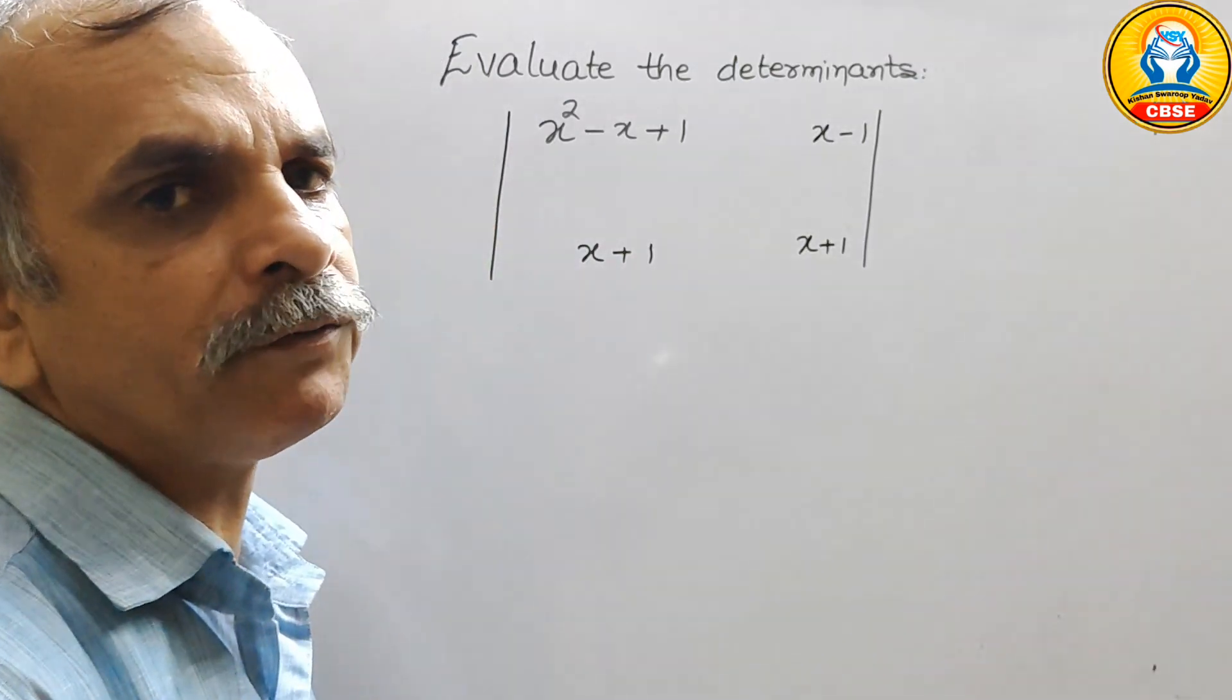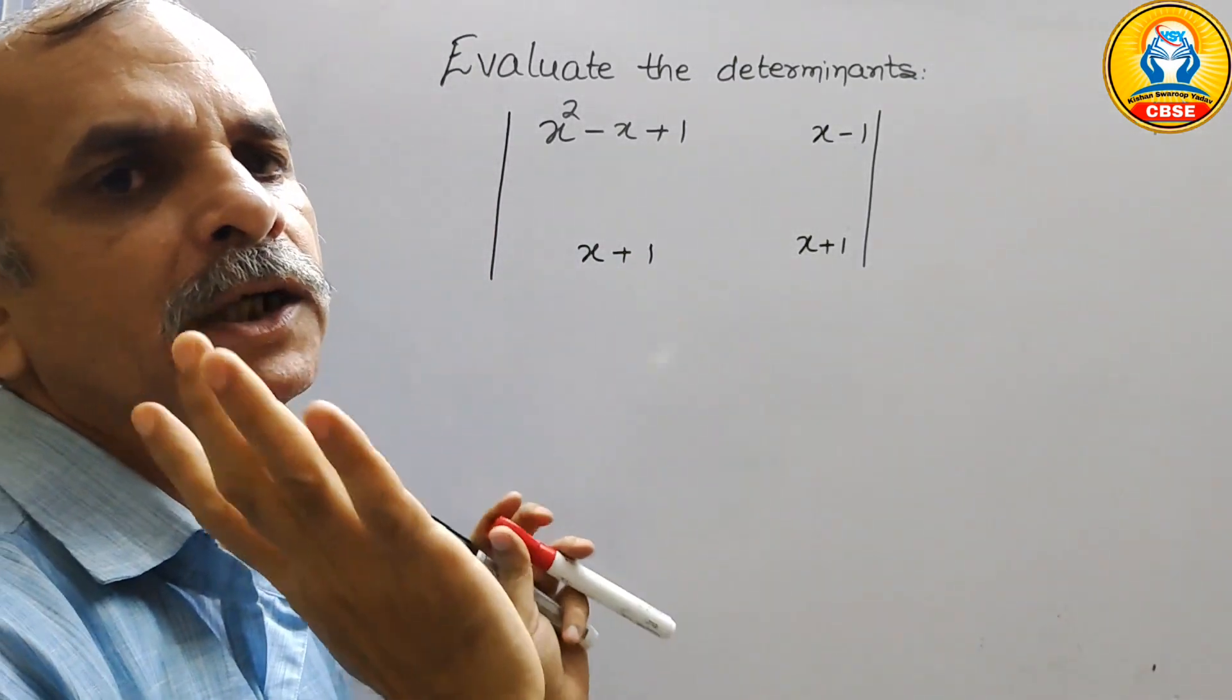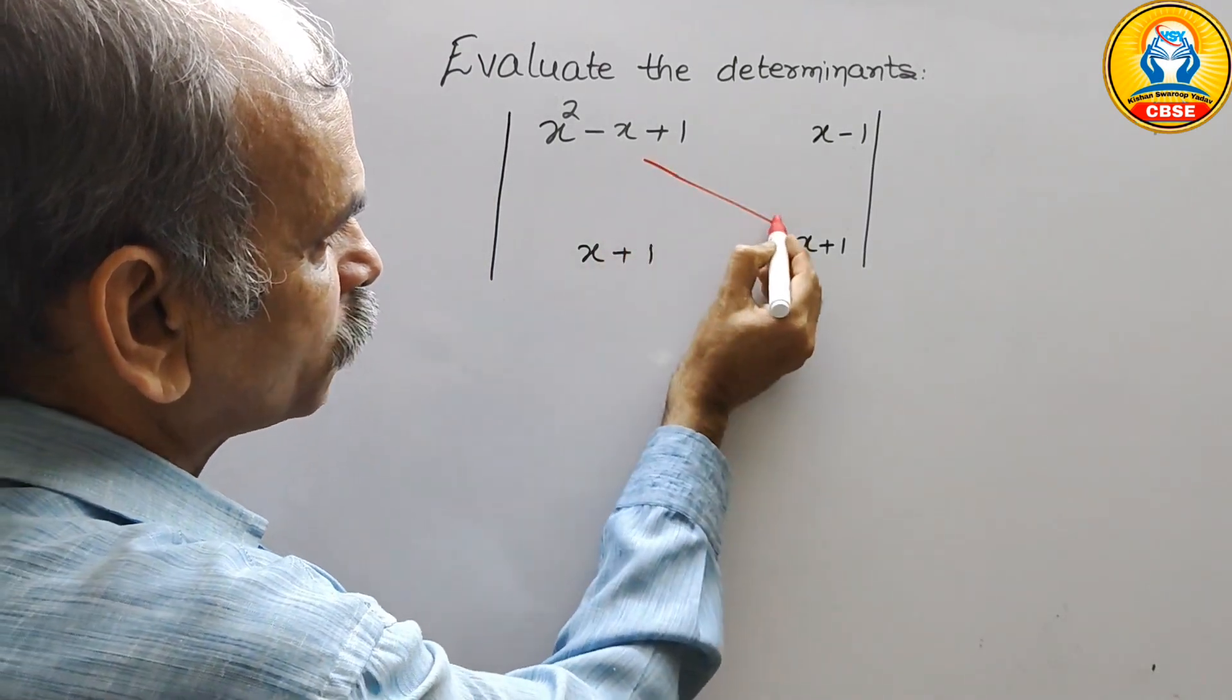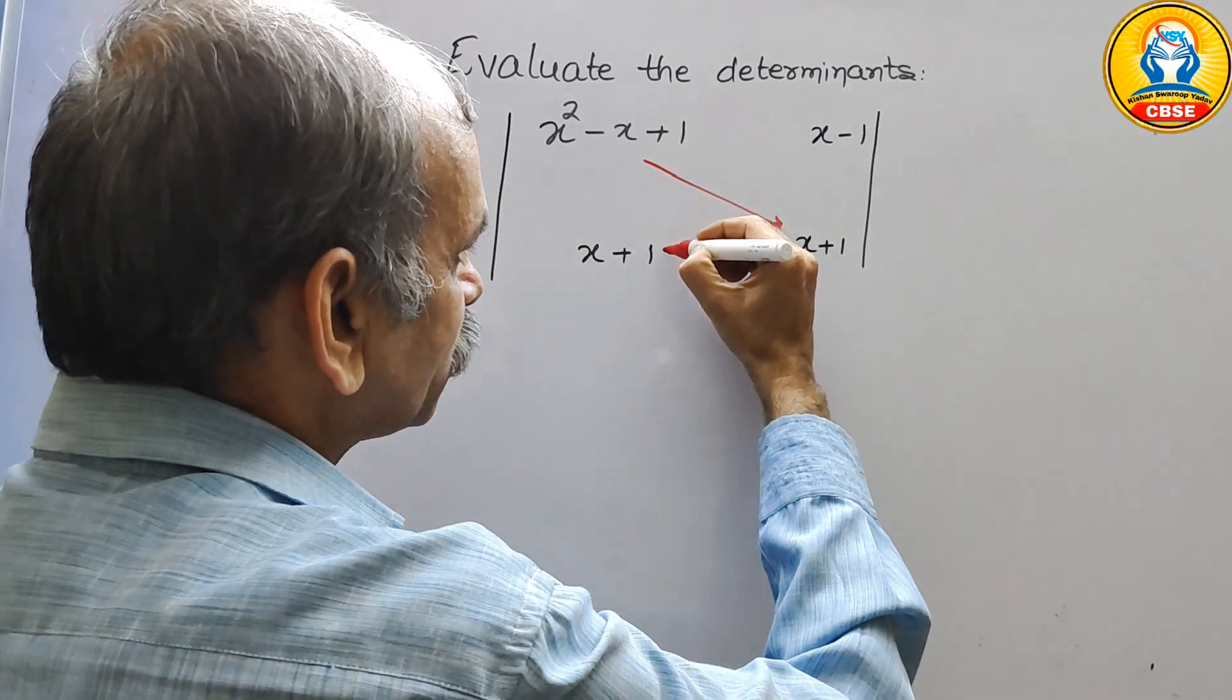In determinants what we have to do, we have to go for cross multiplication of that. So multiply this to this, and this to this.